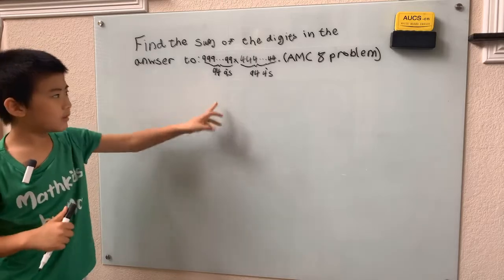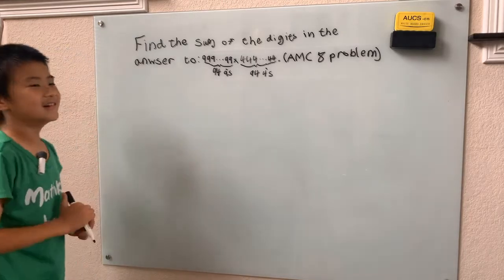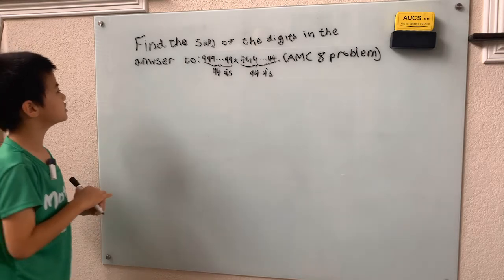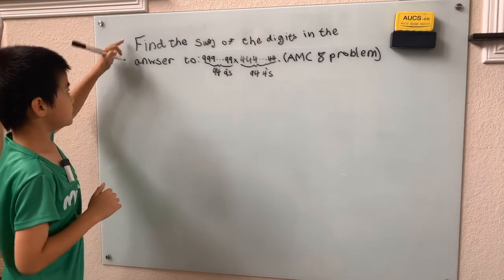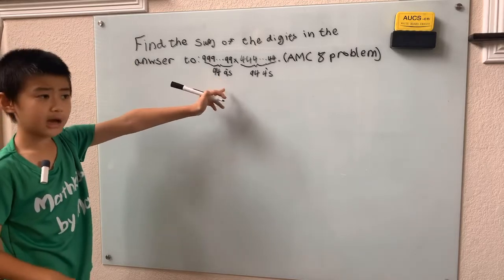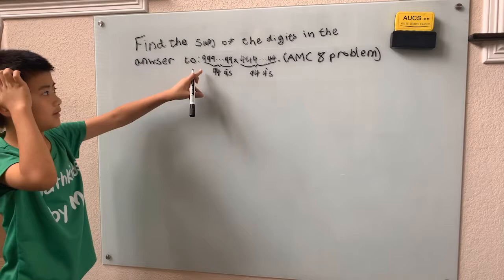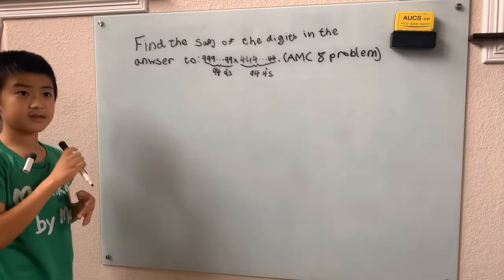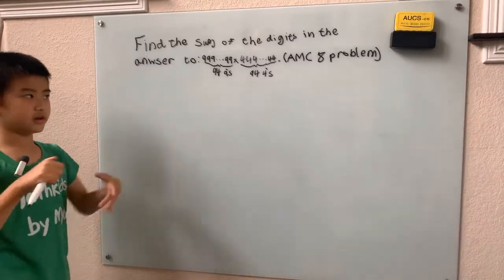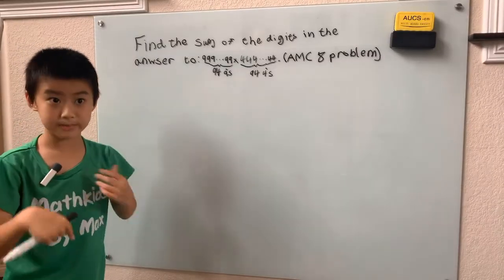In this problem we can write infinitely many nines and infinitely many fours and still get the same kind of answer. This string of nines — this desert of nines — well, nine is always one less than 10, 99 is one less than 100, and that means any string of nines is always one less than a power of 10.